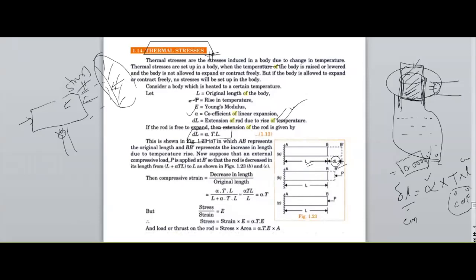We know the relation between stress and strain. The strain (thermal strain) is the change of length divided by original length. Strain in terms of stress is: thermal stress divided by Young's modulus. Since Young's modulus = stress / strain, therefore stress = strain × Young's modulus. The thermal strain can be written as α × T, so the thermal stress = α × T × E (Young's modulus).